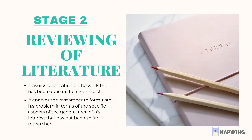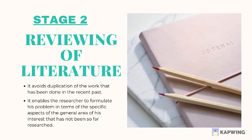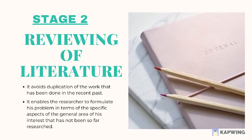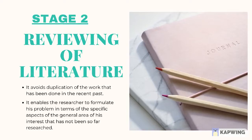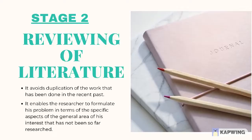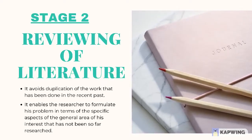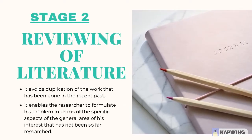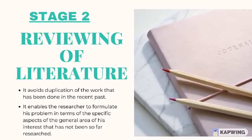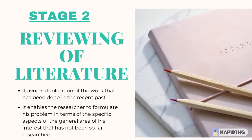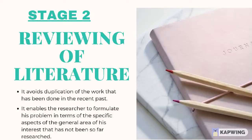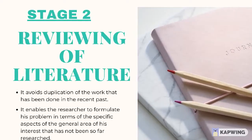Step 2: Reviewing of literature. A review of relevant literature is an integral part of the research process. It enables the researcher to formulate his problem in terms of the specific aspects of the general area of his interest that has not been so far researched. Such a review not only provides him exposure to a larger body of knowledge but also equips him with enhanced knowledge to efficiently follow the research process. Through a proper review of the literature, the researcher may develop coherence between the results of his study and those of others.